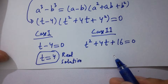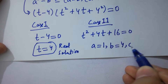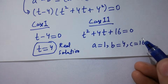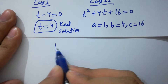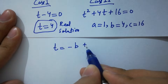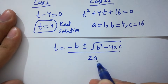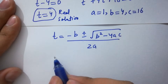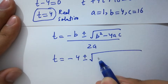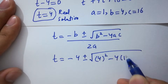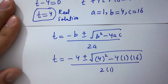For Case 2, we have a quadratic equation with a equals 1, b equals 4, and c equals 16. Applying the quadratic formula: t equals minus b plus or minus square root of b squared minus 4ac, all over 2a. Putting in the values: t equals minus 4 plus or minus square root of 4 squared minus 4 times 1 times 16, over 2 times 1.